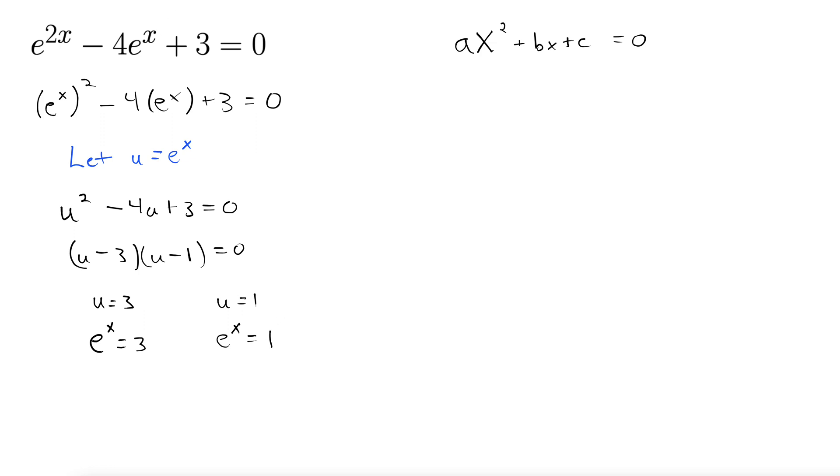Finally, we can solve both by taking the natural log of both sides. That'll get that x down. Anytime you have x in the exponent, you use natural log to get it down. That gives us x = ln(3). And over here x = ln(1), but note that ln(1) = 0. So here are our two solutions: ln(3) and 0.